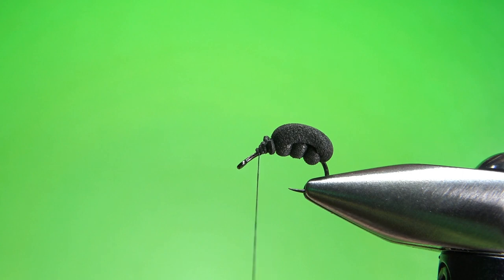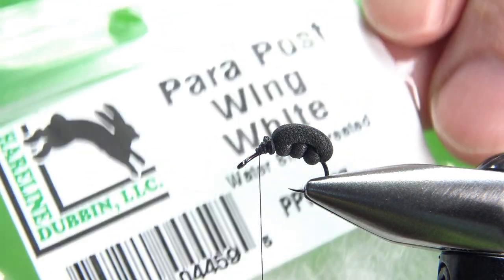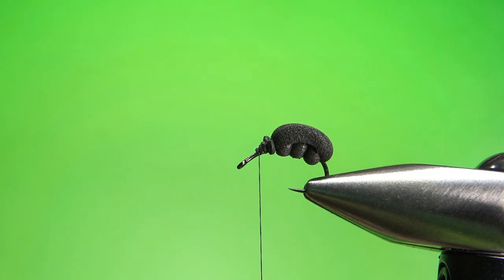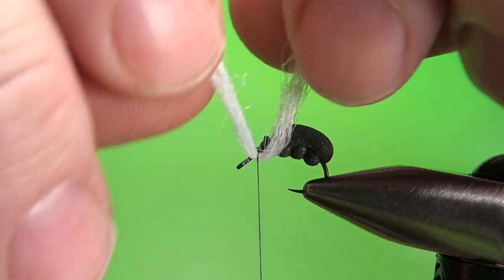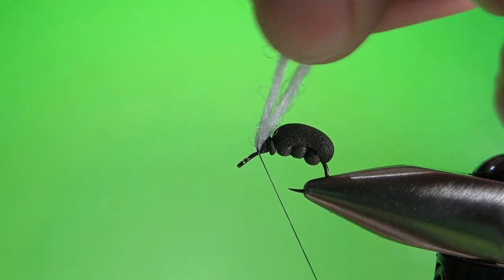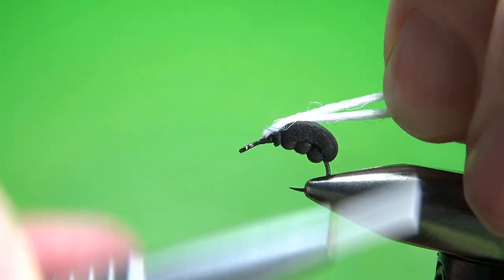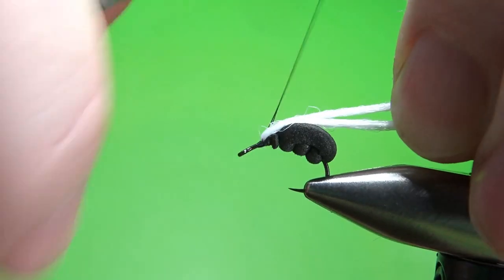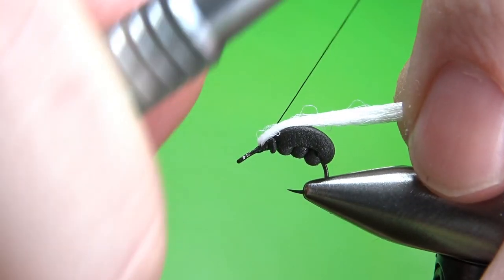I'm putting an indicator on. I mentioned that I fish these with indicators because it does float, but it's not a real high floater. So whatever you use for your indicators, I'm using a white para post wing. You could use any white synthetic would be fine. So I will just take a strand, put it under my thread like that, and then pull it back and wrap my thread up over it.